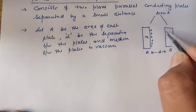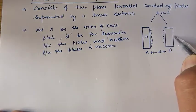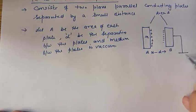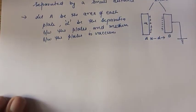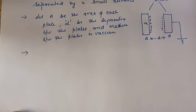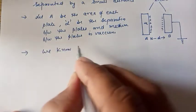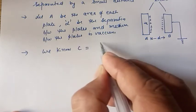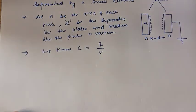When you give positive charge to plate A, negative charge will be induced on the near face of plate B, and positive charge will be induced on the far end. We then earth plate B, so all the positive charge goes to earth. Now we have to find the capacitance, which is the ratio of charge given to the potential raised.